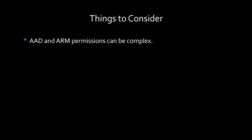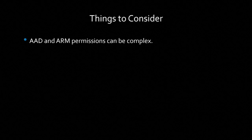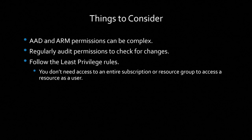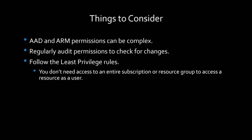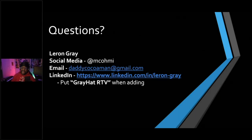Things to consider: These permissions can be complex, so if you are implementing them, make sure you do it the right way. Read the documentation and implement permissions in the way best suited for your tenancy. Regularly audit your permissions to check for changes, and log permission changes. Follow the least privilege rule — you don't need access to an entire subscription to access a single resource. You can give a user permission to access only that specific resource, so enumeration tools like StormSpotter can't be used to find such paths.